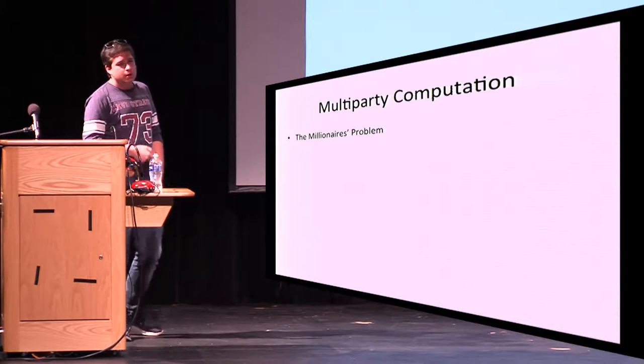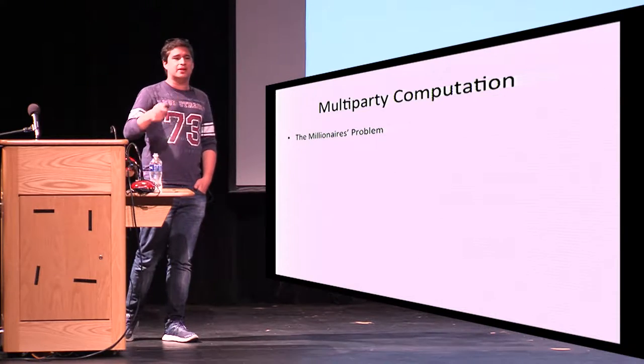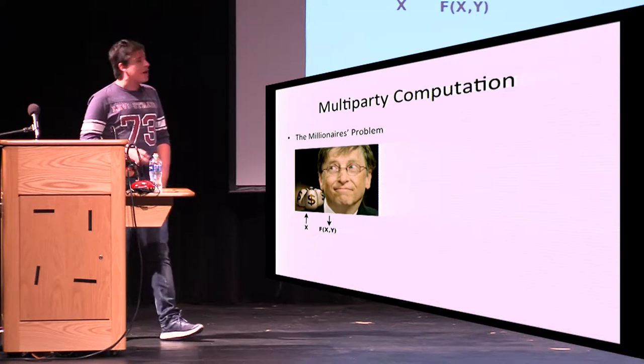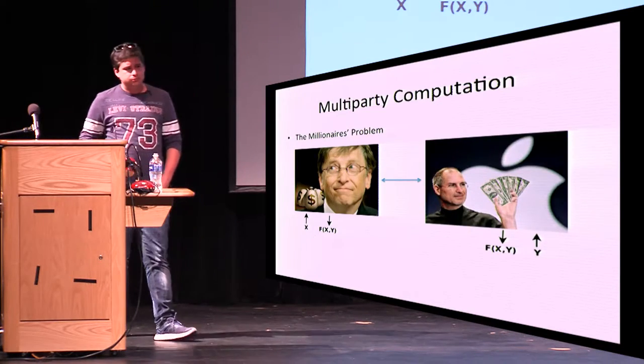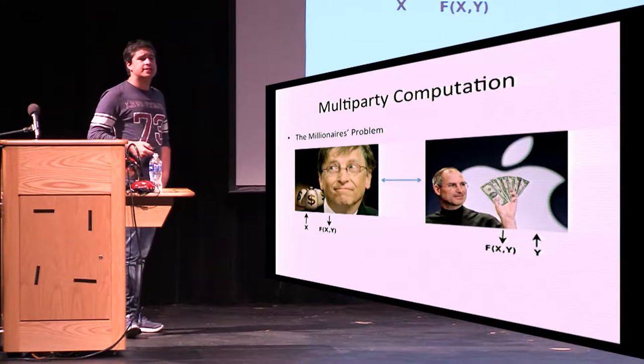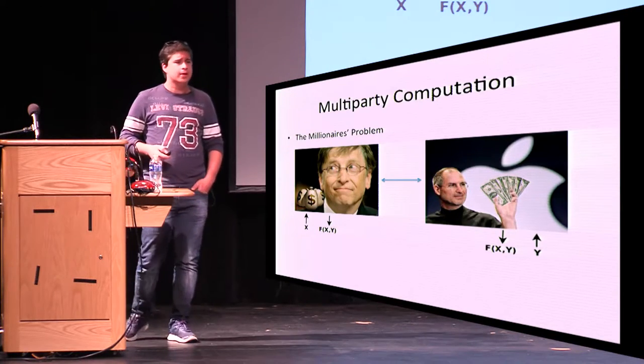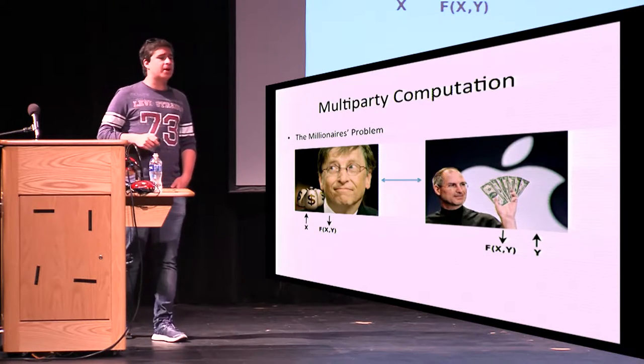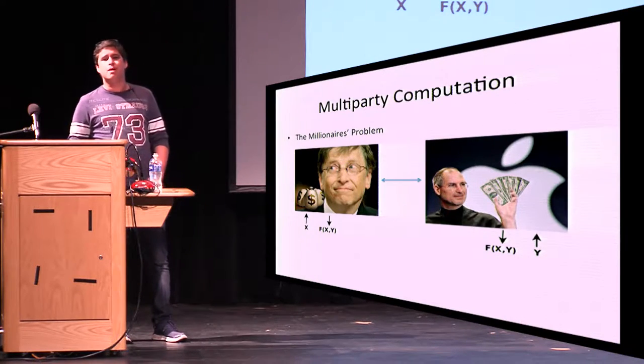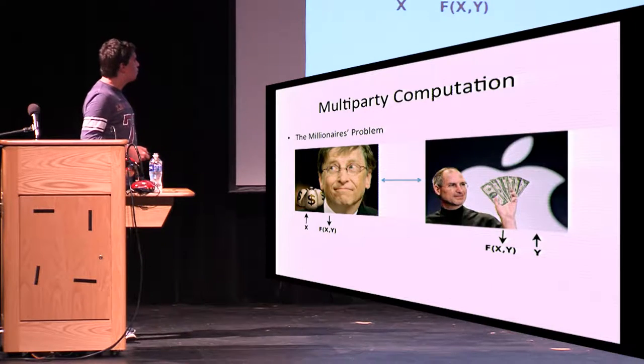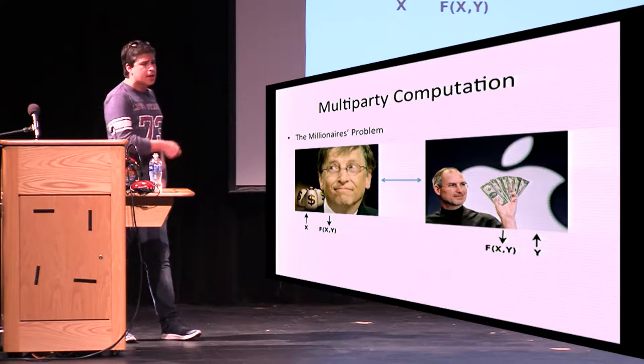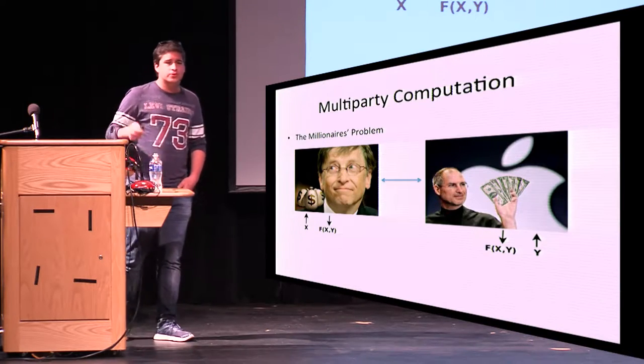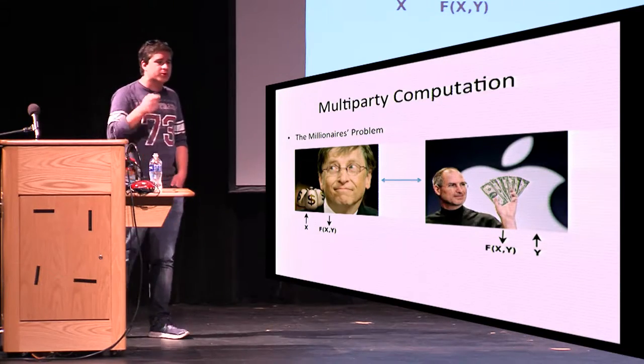Now, why we care about these things? Commitments are good for a number of applications in different cryptographic protocols. For example, multi-party computation. You might have heard about that already a lot, but just a quick introduction. The millionaire's problem. You have two rich people who want to know who's the richest, but they don't want to tell each other how much money they actually have. So they can run a protocol that just tells them who's the richest, but doesn't really reveal how much money each of them has.